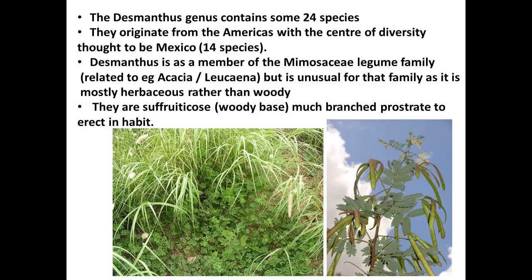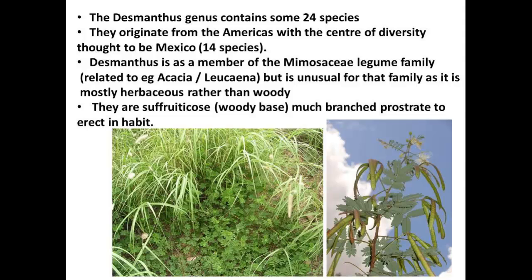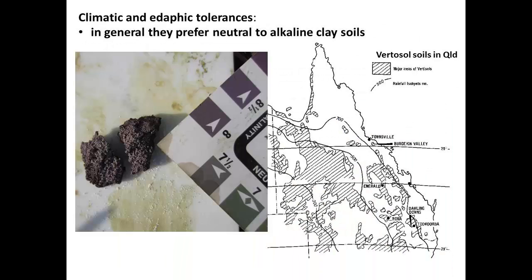In the images on the bottom, you can see on the left some of the prostrate Desmanthus growing through some buffel grass, and on the right is one of the more erect species. In general, Desmanthus prefers to grow on neutral to alkaline clay soils, and on the map you can see in Queensland and across into the Northern Territory there are huge areas of those heavy clay soils, or vertosols.